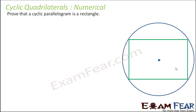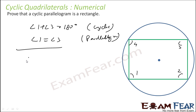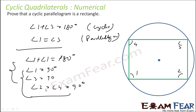We have to prove that a cyclic parallelogram is a rectangle. It is given that it is a cyclic parallelogram. Label the angles 1, 2, 3, 4. Since it is cyclic, angle 1 plus angle 3 equals 180 degrees. But opposite sides of a parallelogram give angle 1 equal to angle 3. Comparing these, angle 1 plus angle 1 equals 180 degrees, so angle 1 equals 90 degrees. Similarly angle 3 equals 90 degrees, and the same logic gives angle 2 and angle 4 equal to 90 degrees. Thus all four angles are 90 degrees and it is a rectangle.